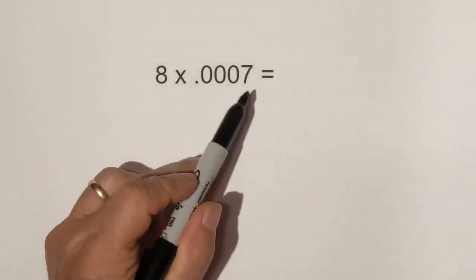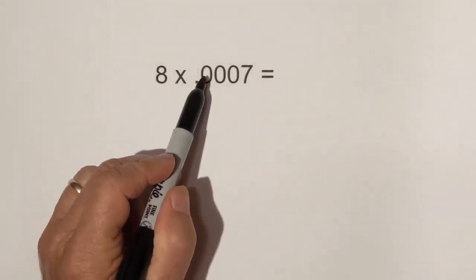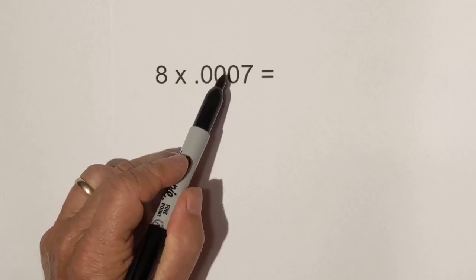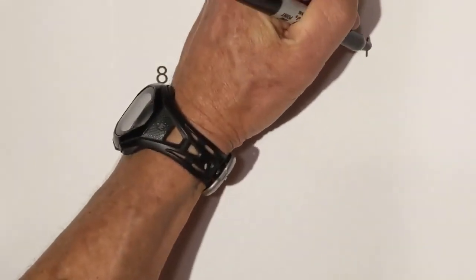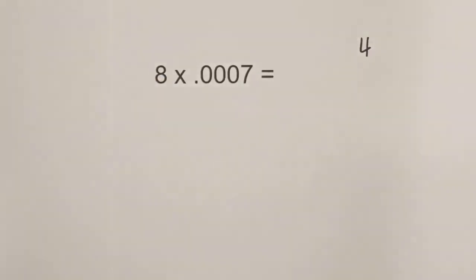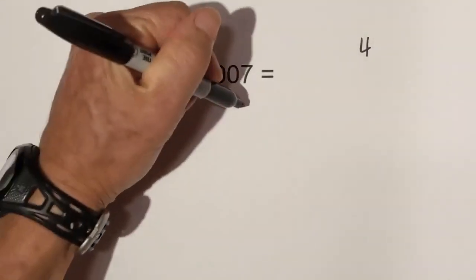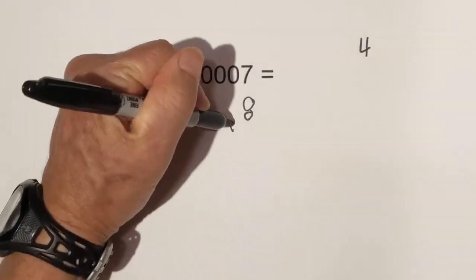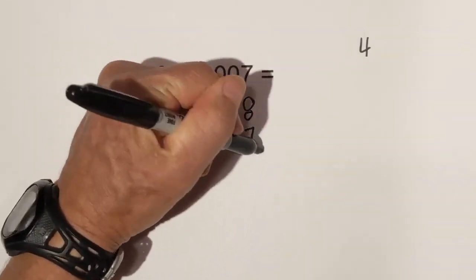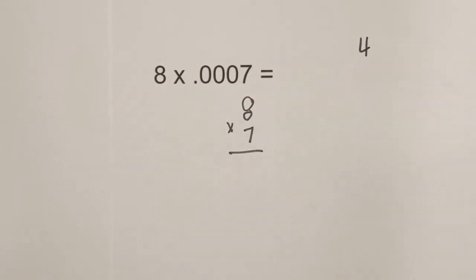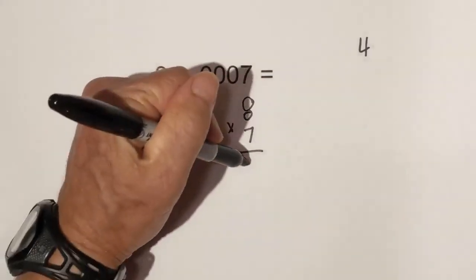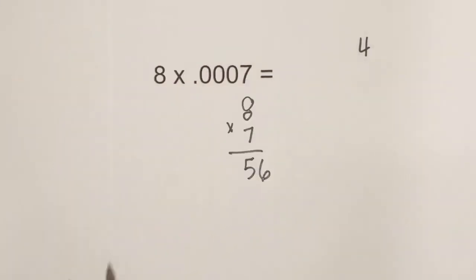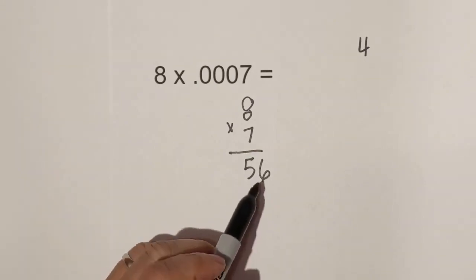Let's work one more example. Step one — count how many are to the right of the decimal: 1, 2, 3, 4. I'll write the 4 right there. Now multiply as if there are no decimals: 8 times 7 is 56. We need 4 numbers to the right of the decimal.